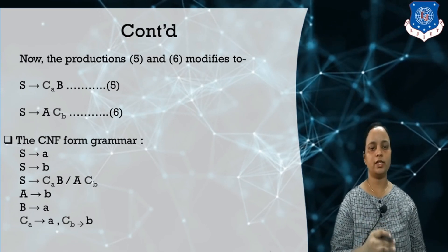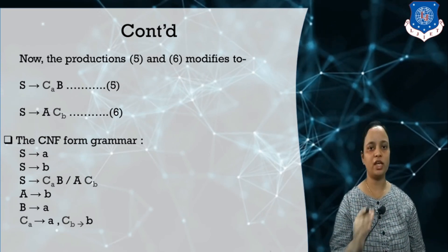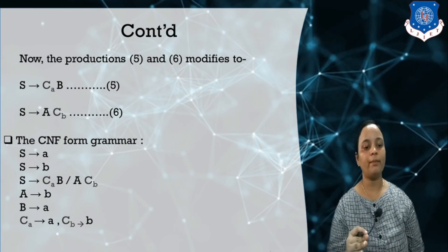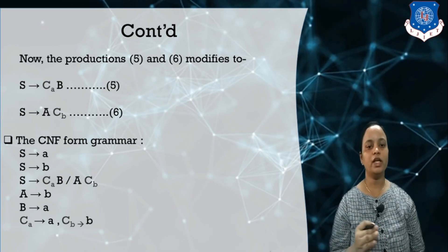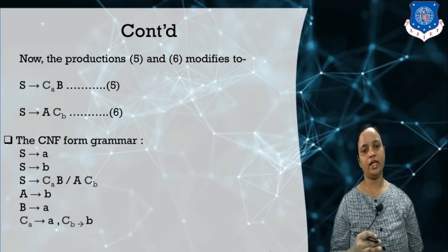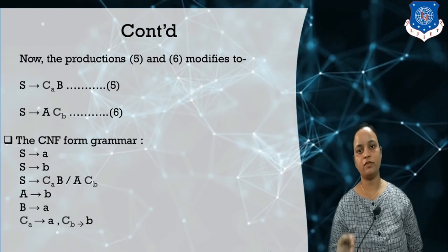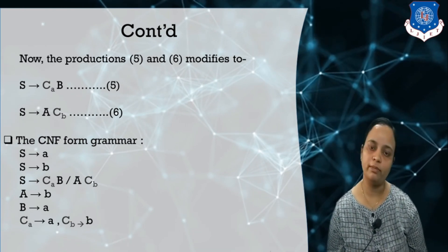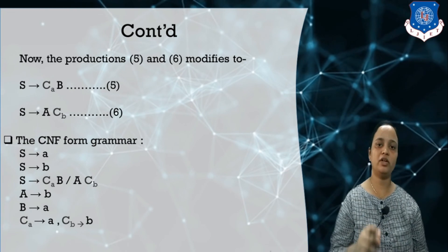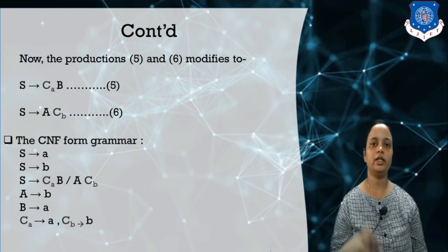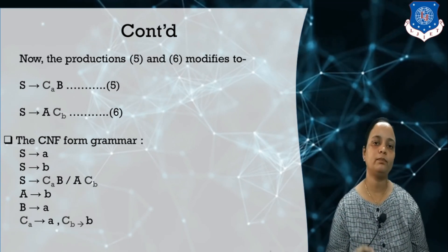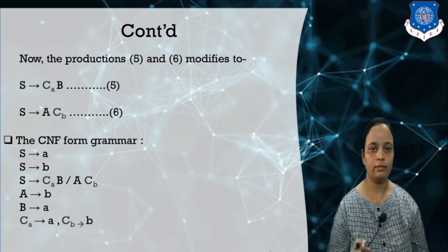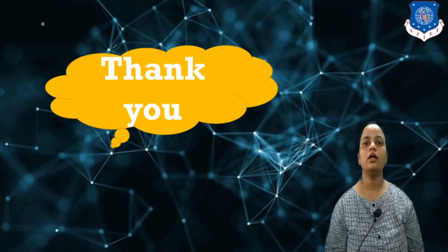This is my grammar which is in CNF form. S derives a — CNF form. S derives b — CNF form. S derives C_a capital B or capital A C_b. A derives b, B derives small a, C_a derives small a, C_b derives small b. Now verify it — all forms are in CNF form, either containing two non-terminals or a single terminal. I hope this concept is clear to you. Thank you all.